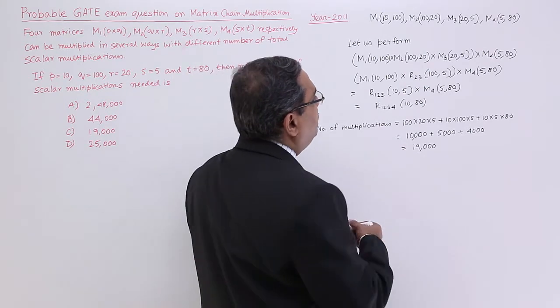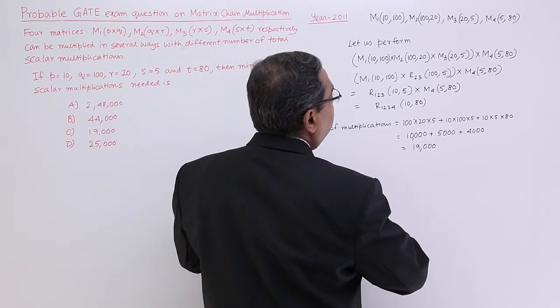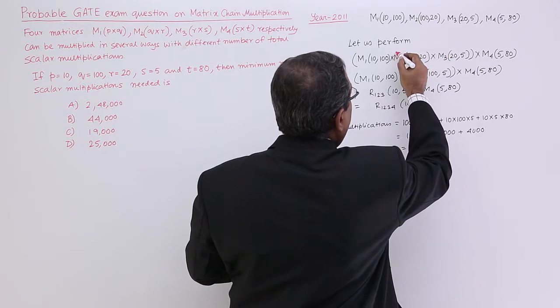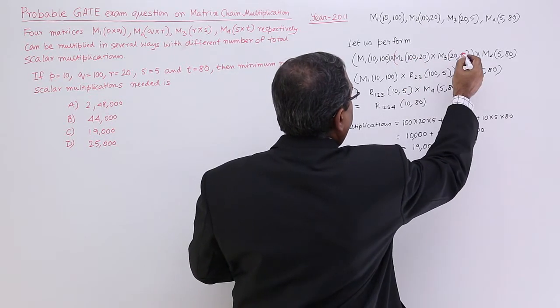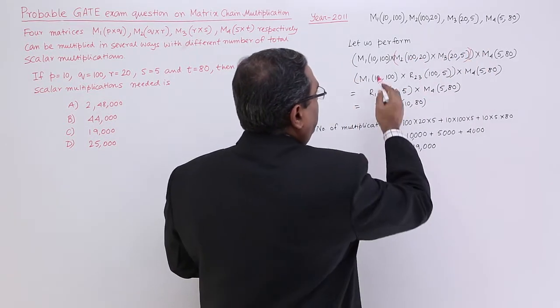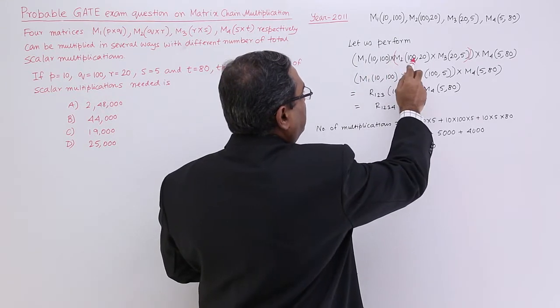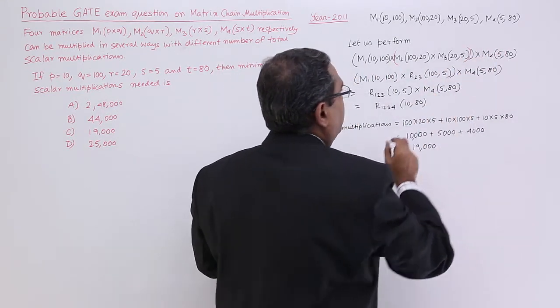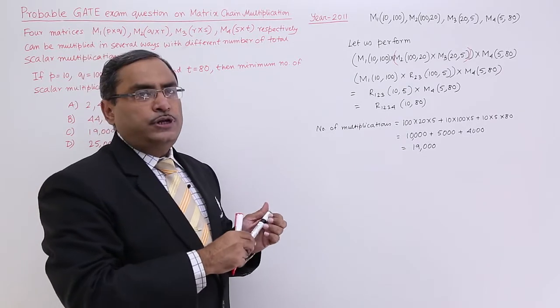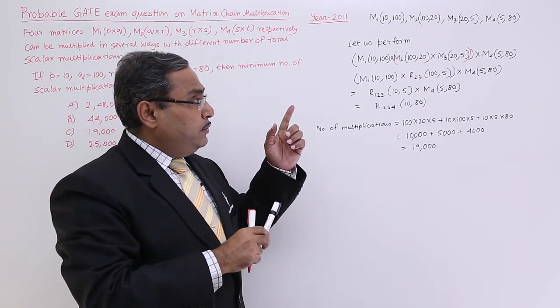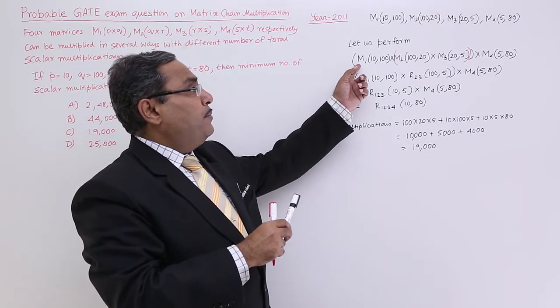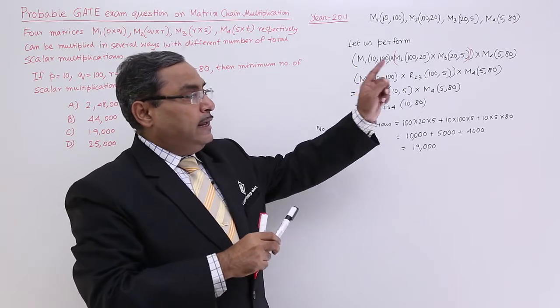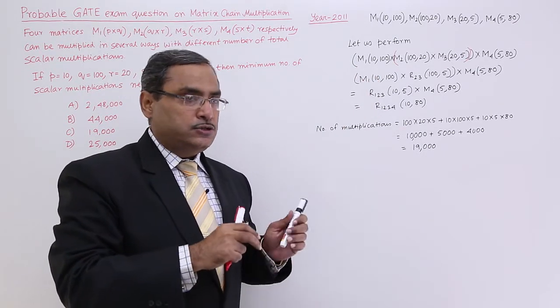That means, we shall be doing multiplication. At first we shall be doing multiplication in between this and this. Then I shall do the multiplication with this. At the end I shall do the multiplication with this M4. So, at first M2, M3 will get multiplied. Then with that resultant matrix M1 will get multiplied and then M4 will get multiplied. Let us do in this way.